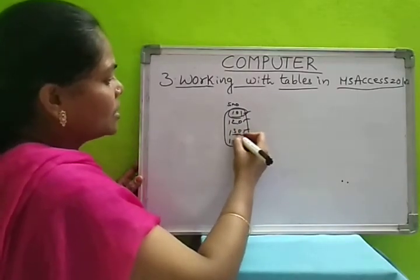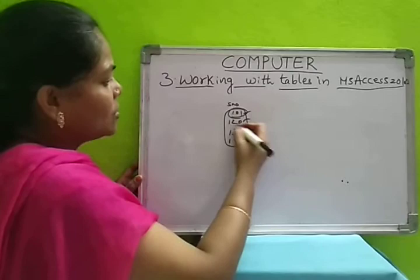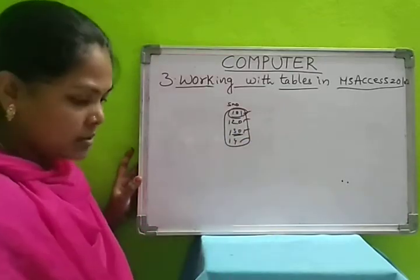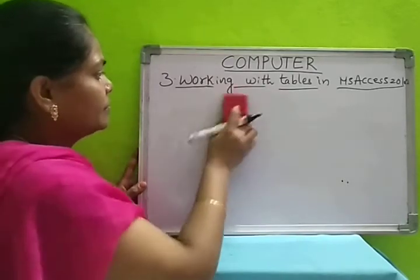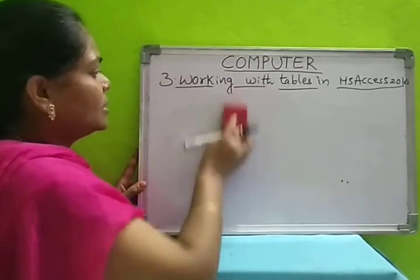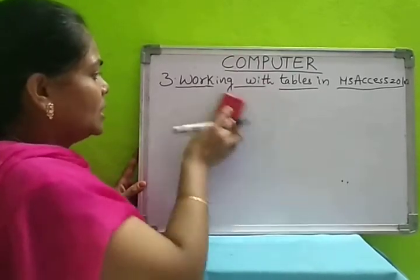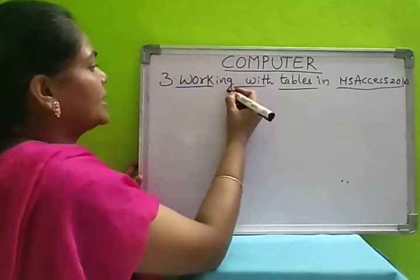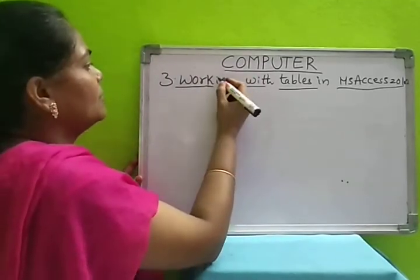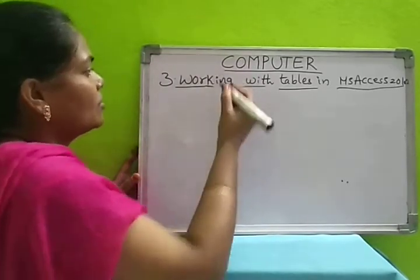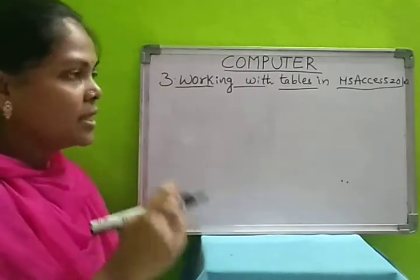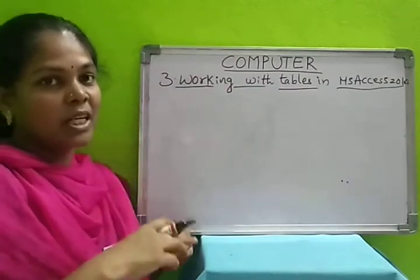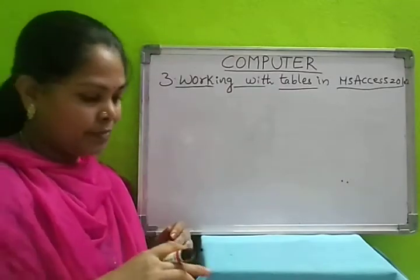Different and unique values you have to give for the primary key and it should not be null — you should not leave any column empty. That should be the primary key. That column you have to select as primary key. If you select any column as primary key, a key symbol will be displayed in front of that column.